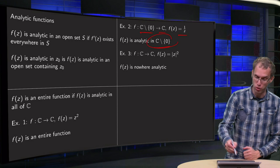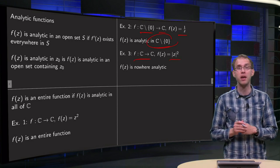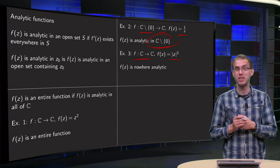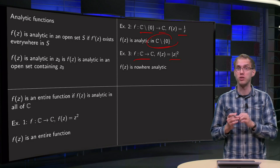Third example, we saw f from ℂ to ℂ, f(z) = |z|². Now, we saw that we could differentiate f only at 0, so f is differentiable only at z = 0.